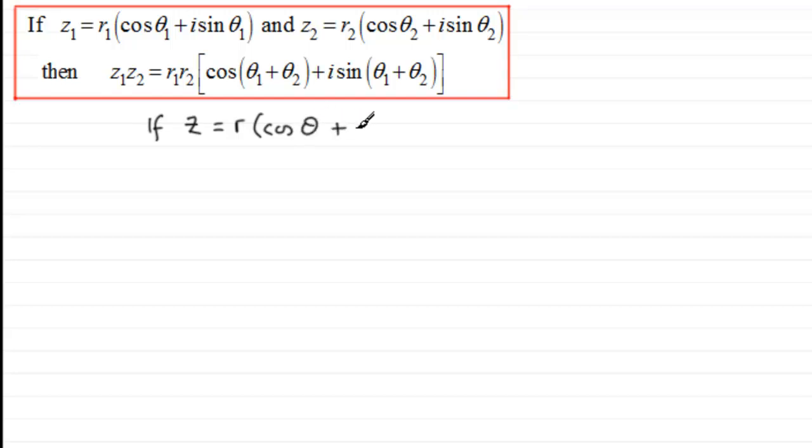Then if we were to square this, Z² would be equal to R(cos θ + i sin θ) multiplied again with R(cos θ + i sin θ). And by the result up here, then this must be equal to R times R, which is R², and then all we need to do now is just add the arguments together.